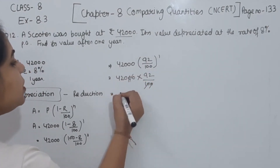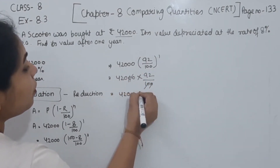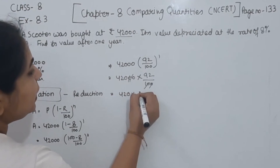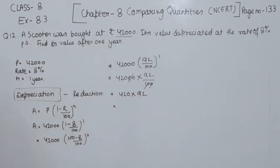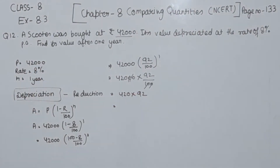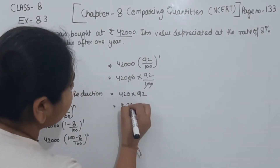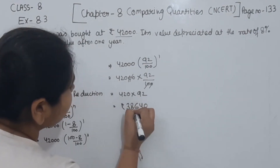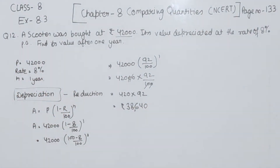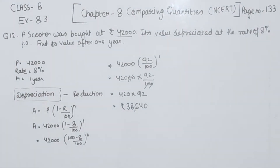Two zeros cancel from 2 zeros, giving us 420 × 92. Multiplying this, we get the value equal to rupees 38,640. This is the value of the scooter after 1 year. With this, we have completed question number 12.